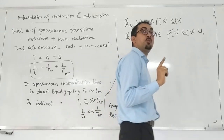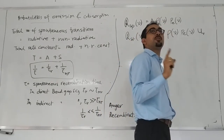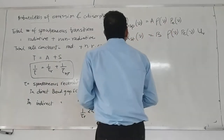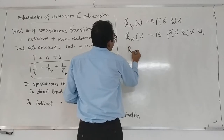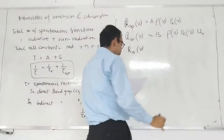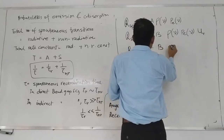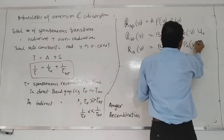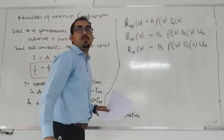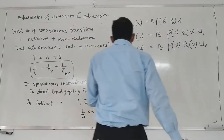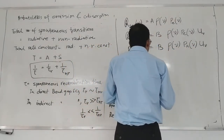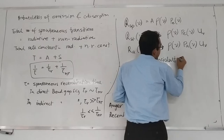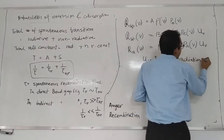Einstein said that this is equally probable. This is purely quantum mechanics. It was funny — Einstein never believed in the theory of quantum mechanics, but he himself started the theory of quantum mechanics. And then we have the rate of stimulated absorption, which is similar to stimulated emission except we have the probability of absorption and the incident radiation intensity.